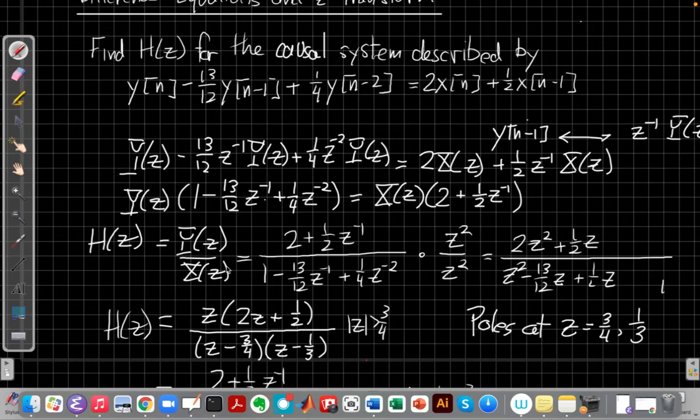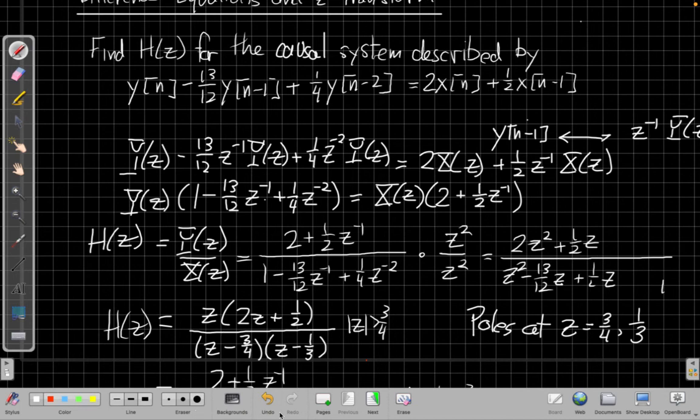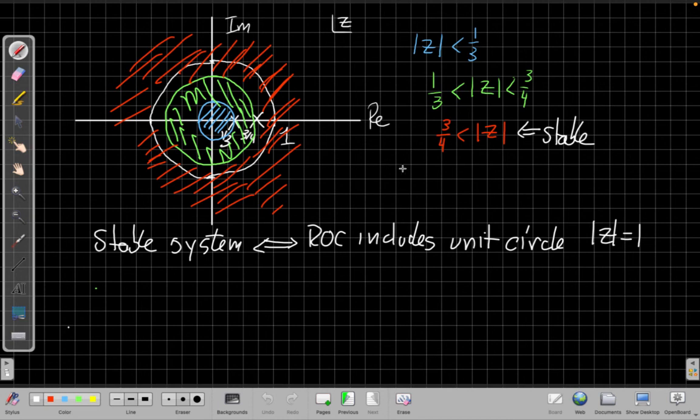And so a right-sided impulse response means the ROC goes outward from the largest finite pole. So if I go back to my pole-zero diagram here for a second, again, I'd say, well, where's, which ROC is outside the largest stable pole, largest finite pole, it's the same one. So I'd actually get whether the system had, was specified, whether the problem told me the system was stable, or if it told me it was causal, either one would be the same ROC in this case, because all the poles are inside the unit circle.